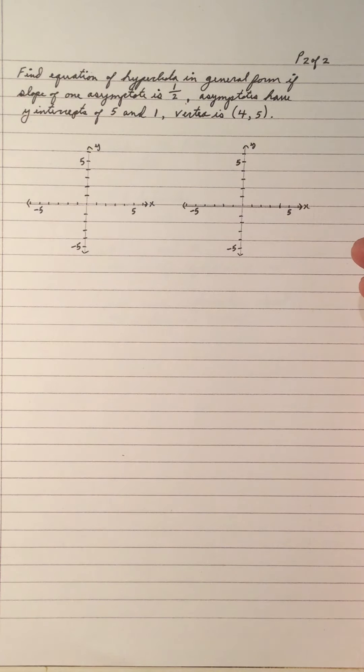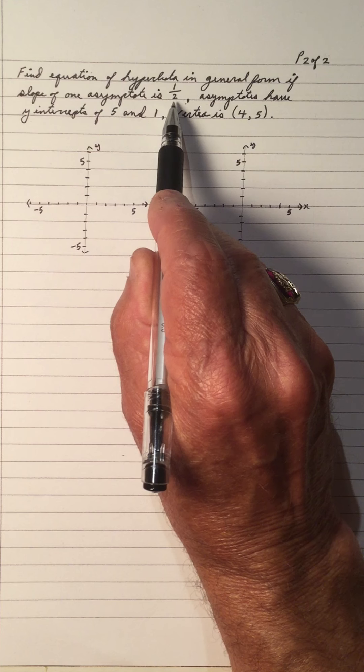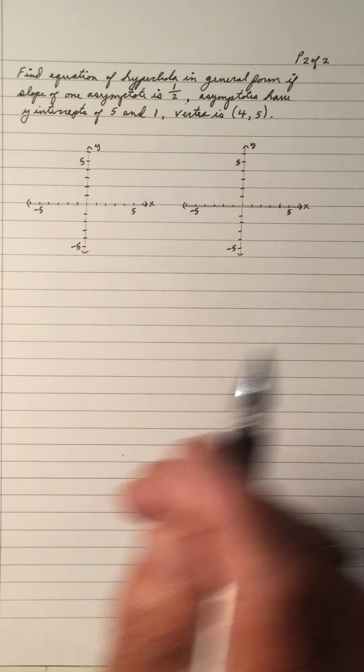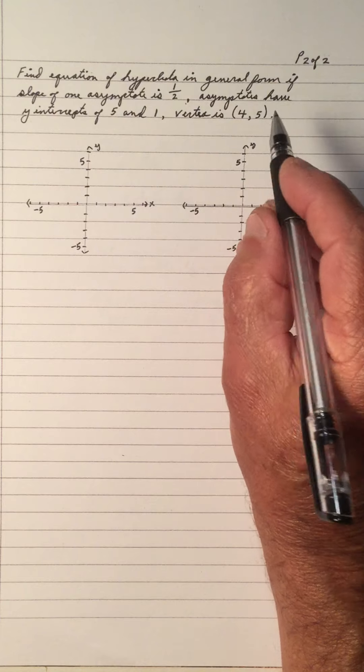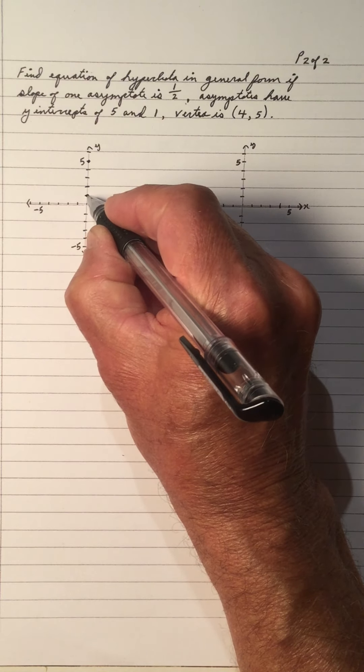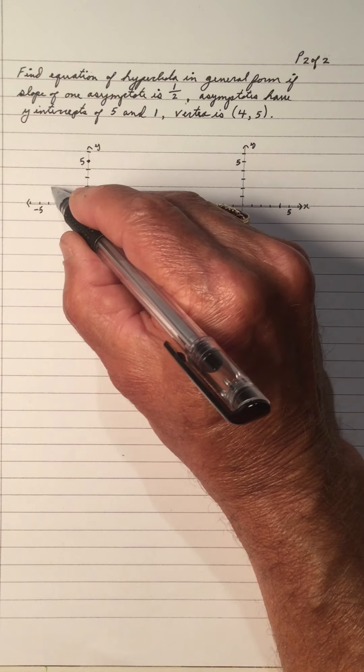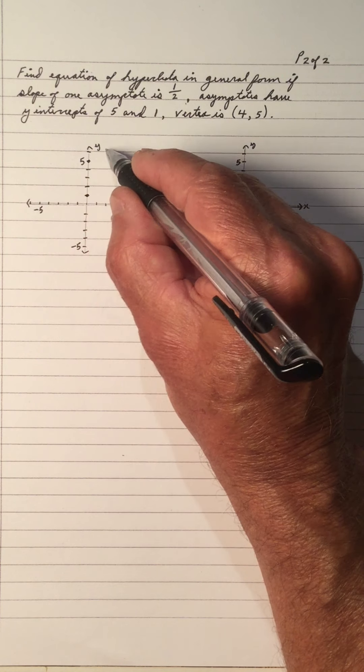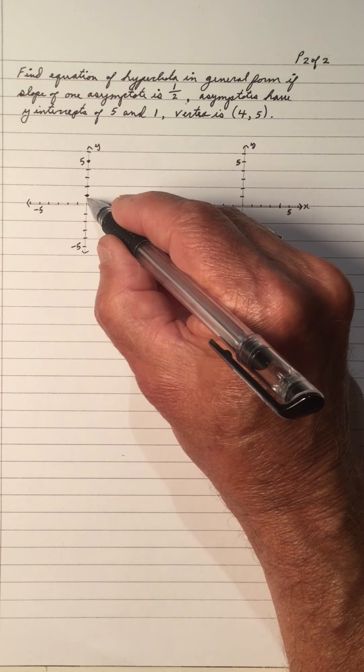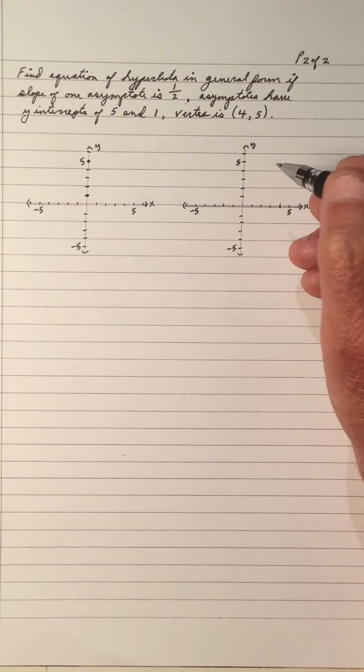You see I have two graphs here because you have a slope of a half. Now we know that the other slope is a negative half because one asymptote is positive, the other one is negative, and they both pass through the center. And it has y-intercepts of 5 and 1. The y-intercept is 5 and the y-intercept is 1. But I have two graphs. So I don't know if the asymptote going through the 5 is positive or if it goes through the 5 negative.